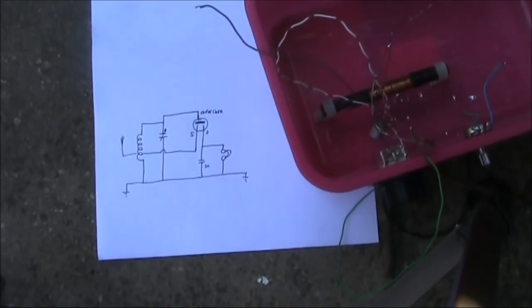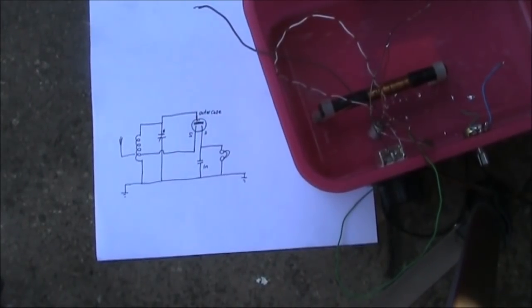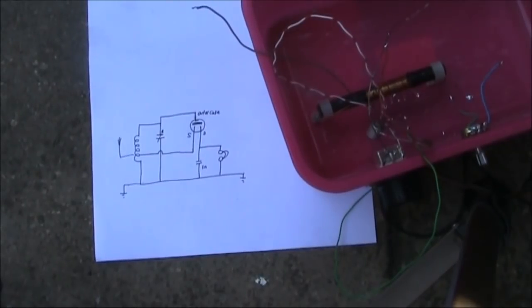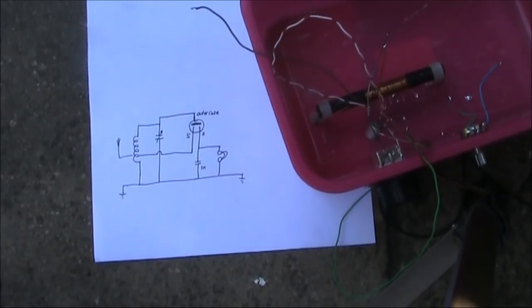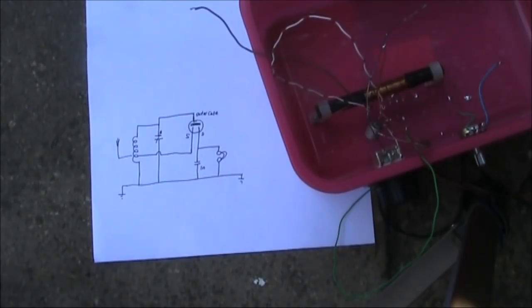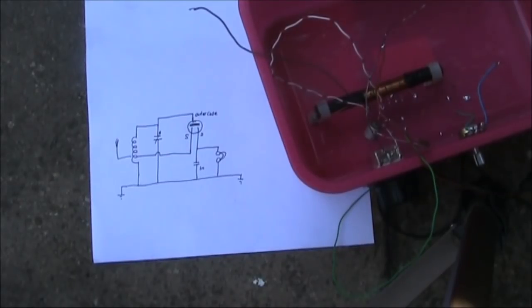This has been a quick look at a simple and novel crystal set. All you need is an electret microphone insert as your detector, almost any type of headphone and you'll be able to listen to the AM broadcast band provided you've got a reasonable antenna and earth.